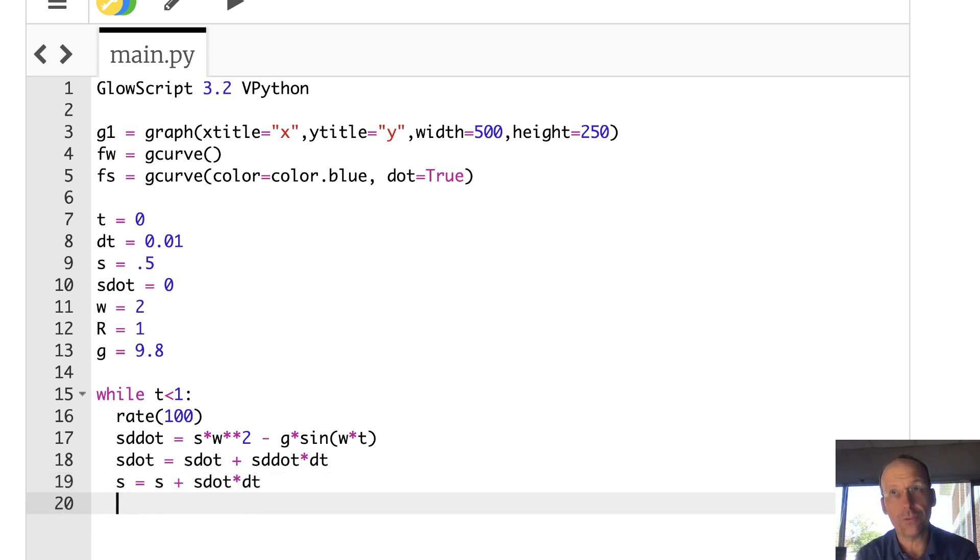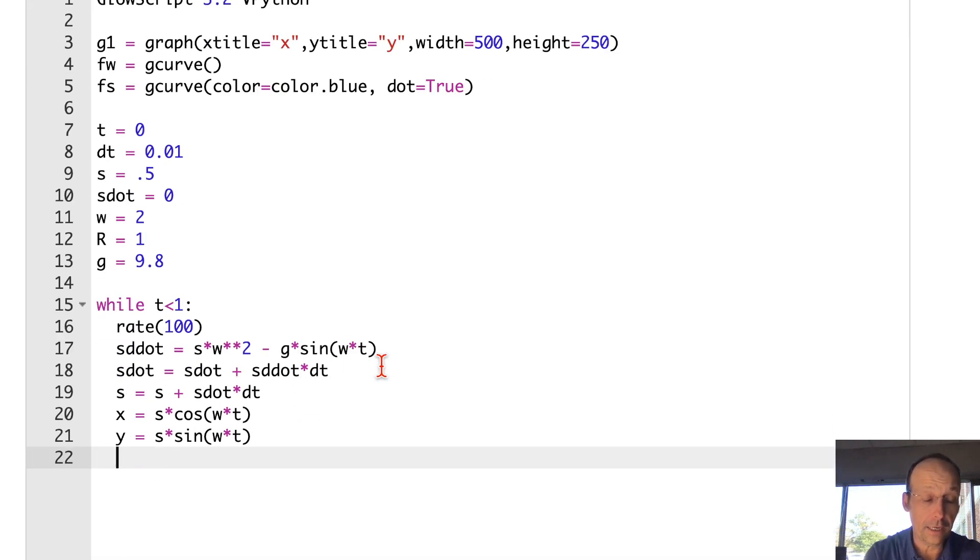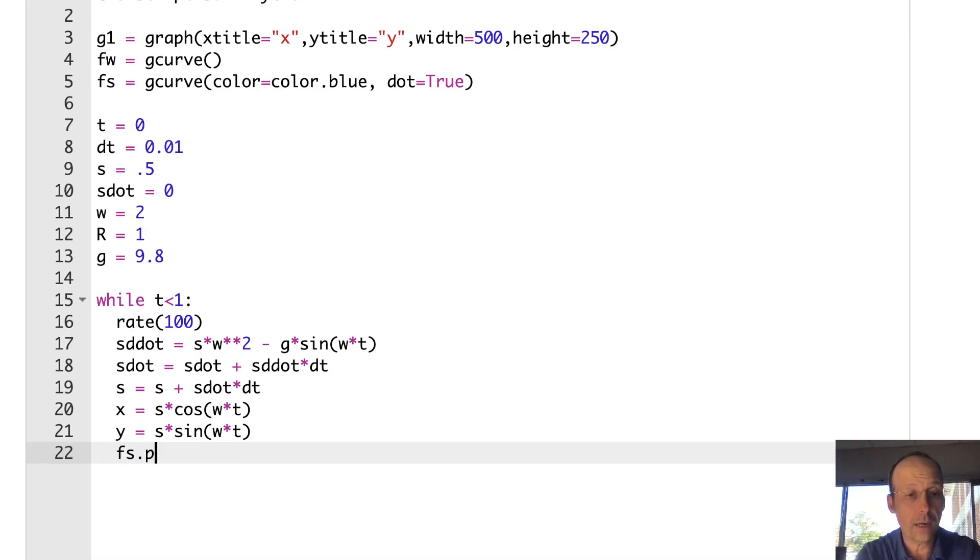Now with that I can update s dot. s dot equals s dot plus s double dot times dt. And then s equals s plus s dot times dt. Now I want to plot x and y. So I need to calculate x and y. I have that equation for x and y. x equals s times cosine omega times t. y equals s times sine omega times t. Now I can plot it. So I can say fs dot plot. The x coordinate is x. The y coordinate is y. Increase time by a time step. t equals t plus dt. And that should be it. Let's run it and see what happens. I mean, that's a pretty simple program. You gotta admit it.